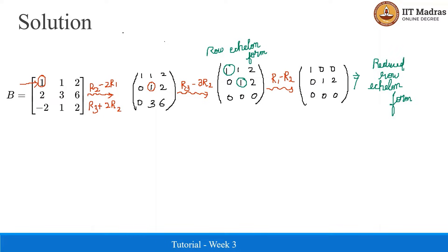Once we have obtained this reduced row echelon form, the non-zero rows of this reduced row echelon form correspond to the row space of the matrix B. Therefore, row space of B is span of (1, 0, 0) and (0, 1, 2).